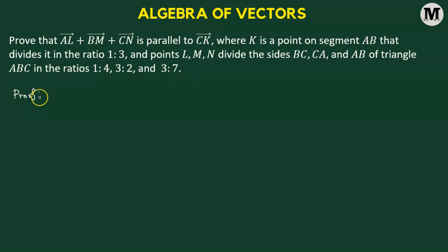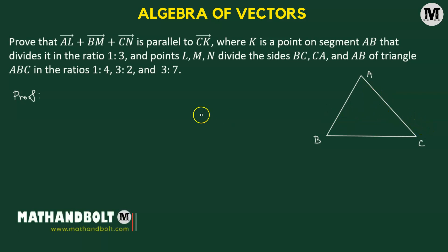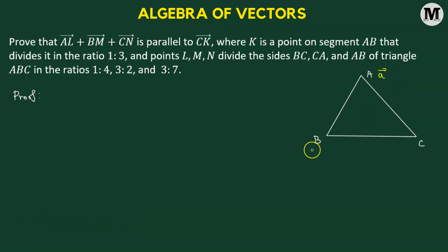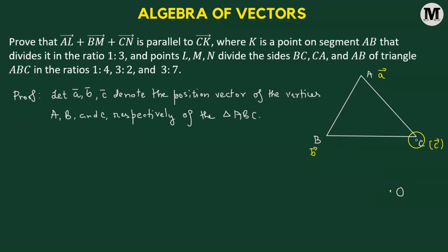Let's try to sketch the triangle ABC. We're going to represent the vertices of the triangle ABC with three position vectors. We'll denote the position vector of vertex A as vector A, position vector of vertex B with vector B, and position vector of vertex C with vector C. This means we have a coordinate system whose origin is at O, so the position vector of vertex A is the vector from O to A, and similarly for B and C.